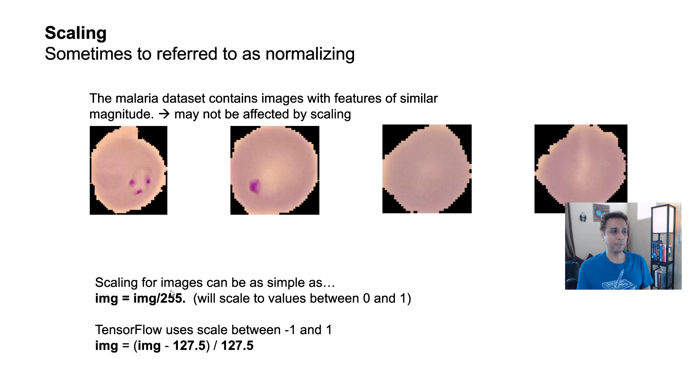Scaling can be as simple as just dividing by 255 because these are images, 8-bit images, and for 8-bit images, your pixel value goes from 0 to 255. So by dividing by 255, you're forcing the values between 0 to 1.